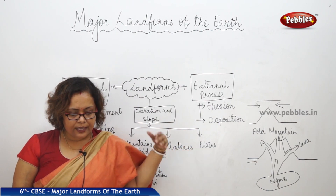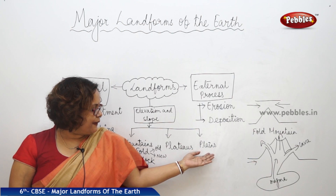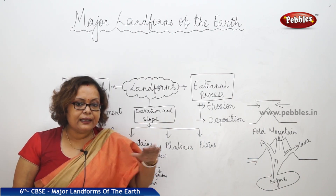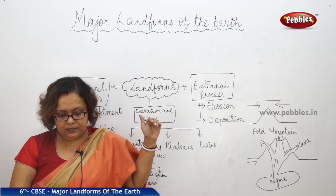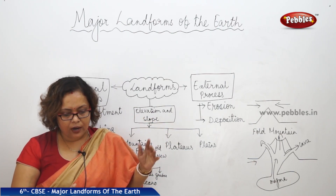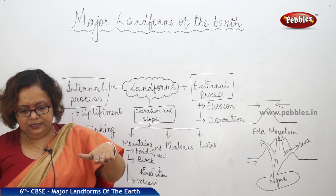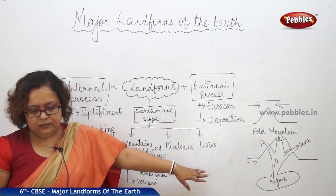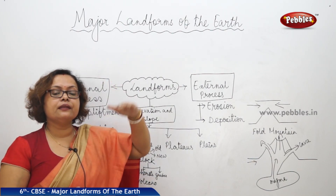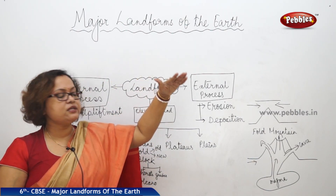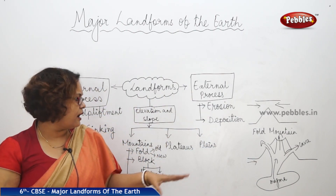The next landform is the plain. By the name we can understand that plains are flat land situated around 200 meters near the mean sea level. Plateaus are much higher, and mountains are more than 4,000 meters in height, while plains come to around 200 meters or below in elevation.